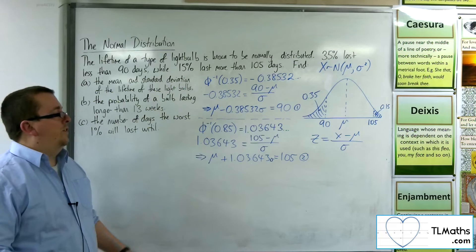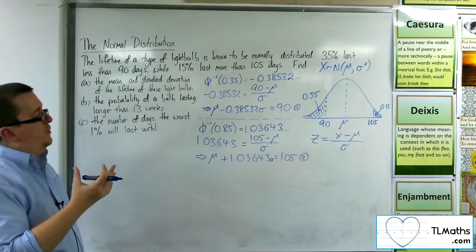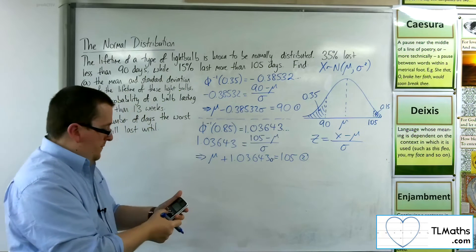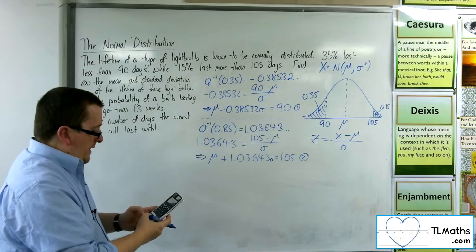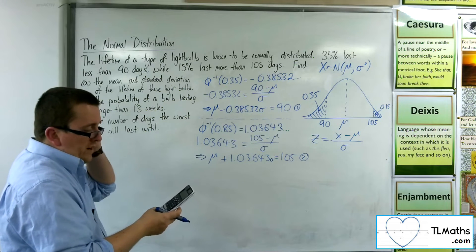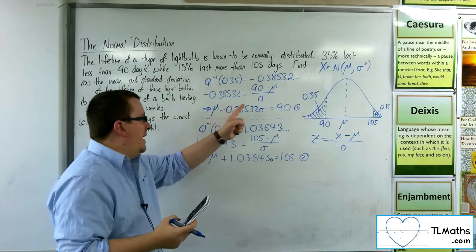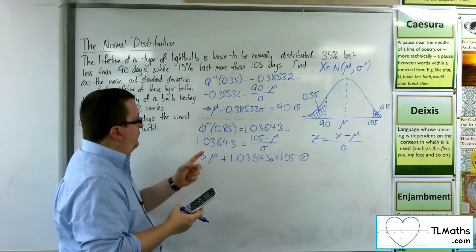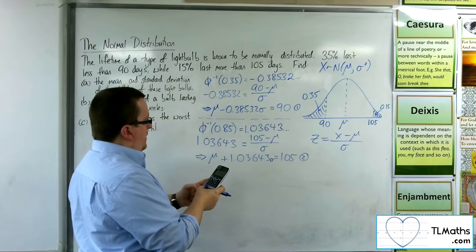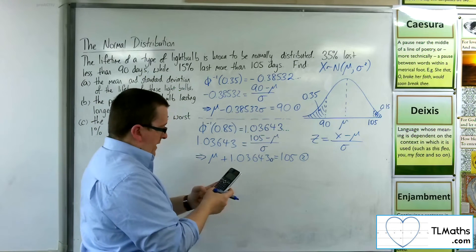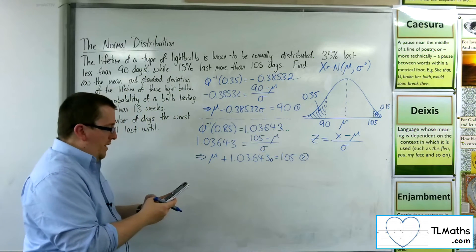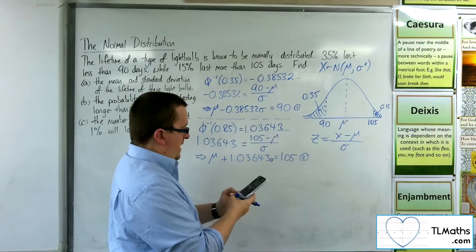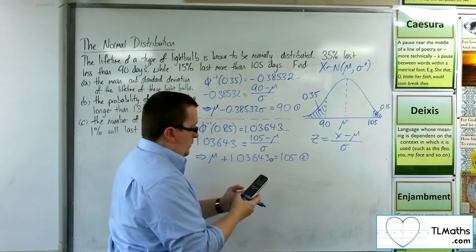So now I want to do simultaneous equations on these. So I could work with an algebraic approach. I'm going to go straight in with the calculator. So going to menu and then A. And then we want number 1 for simultaneous equations, two unknowns. So I'm going to treat the mu as the x and the sigma as the y. So I'm going to have 1x minus 0.38532y equals 90.